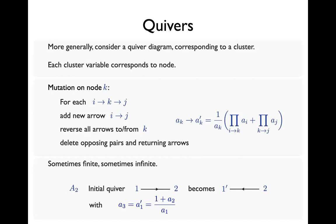What's interesting is that sometimes these cluster algebras are finite — I did five hops and got back to where I started. But often, more generally, they're not finite: you start mutating, keep mutating, and go on forever generating more and more complicated cluster variables, infinitely many possible clusters.